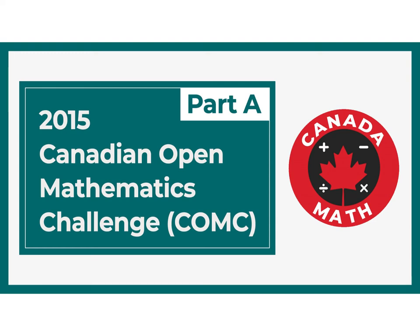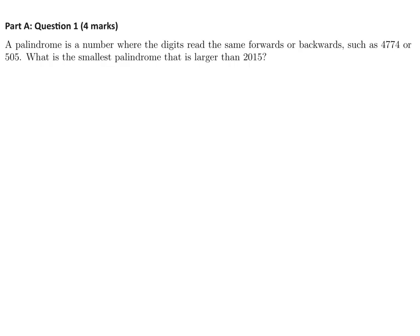2015 Canadian Open Mathematics Challenge Part A. A palindrome is a number where the digits read the same forwards or backwards, such as 4774 or 505. What is the smallest palindrome that is larger than 2015?